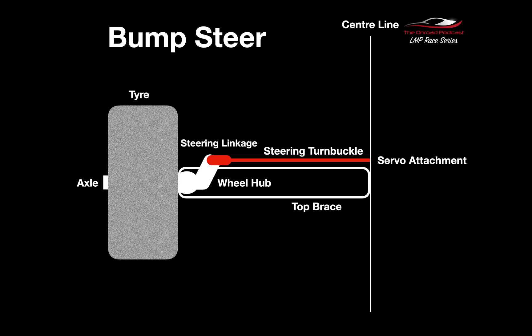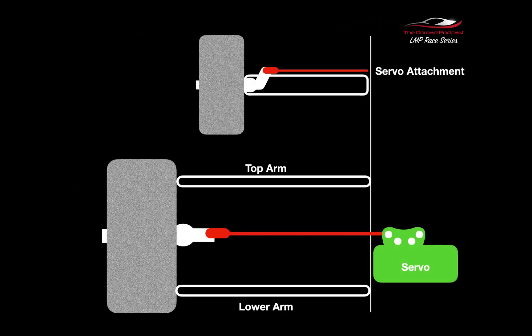If we then change our perspective on the bottom of the screen, now we're looking from the front of the car. On the top image again, we're looking down on the top of the car as well.